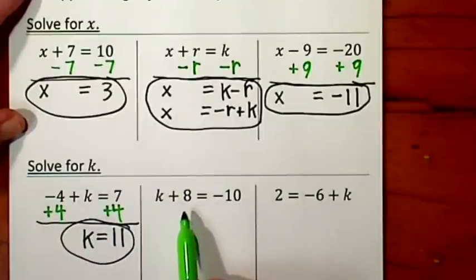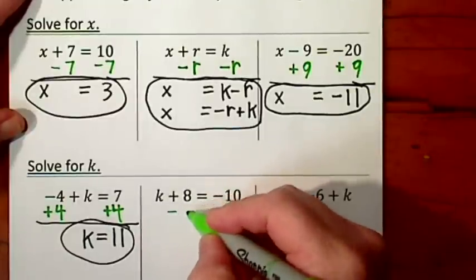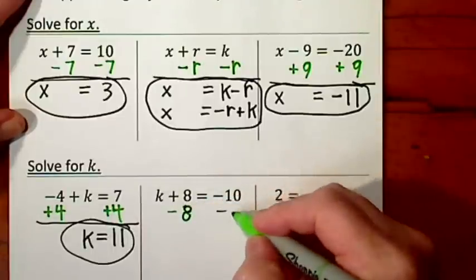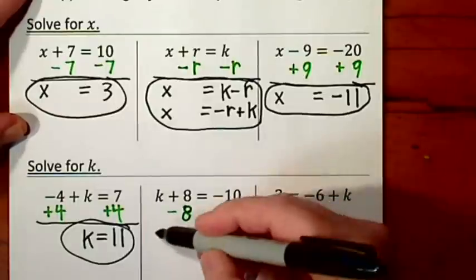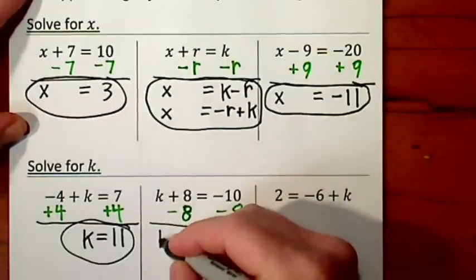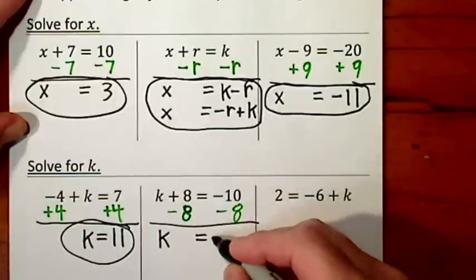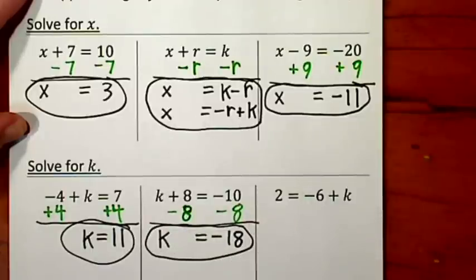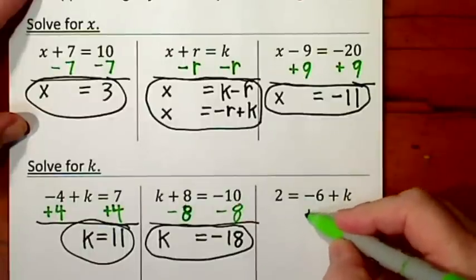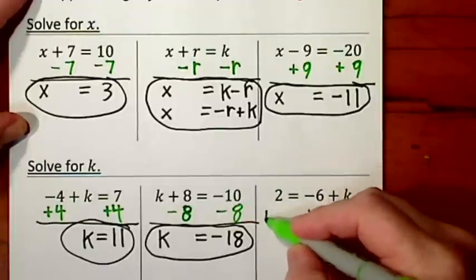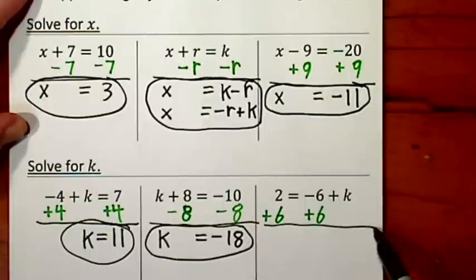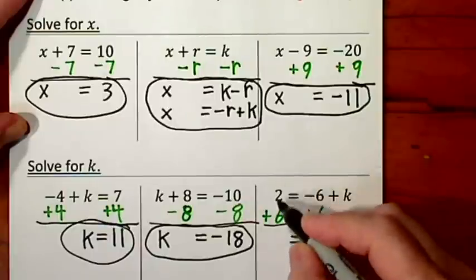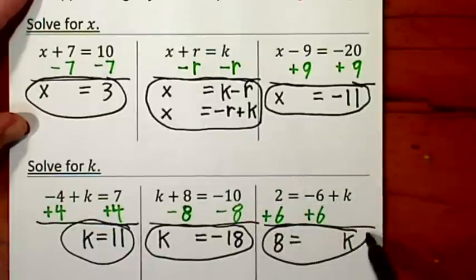To get k by itself, I want to get rid of this positive 8, so I'll put a negative 8 underneath it. Draw a line and bring everything down. k is by itself — signs are the same, you add and keep the sign. There's our solution. To get k by itself in the next example, I want to get rid of a negative 6, so I put a positive 6 underneath it and a positive 6 on the other side of the equal sign. k comes down — that's a 0, I don't bother to write it. The solution is 8.